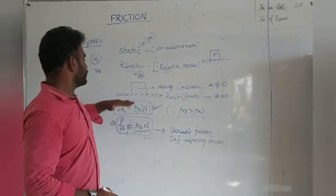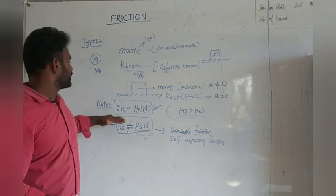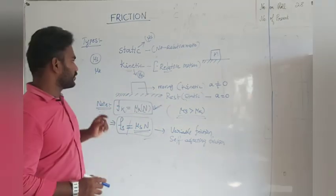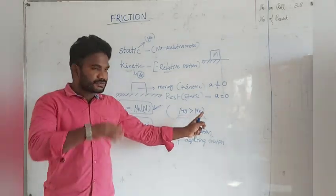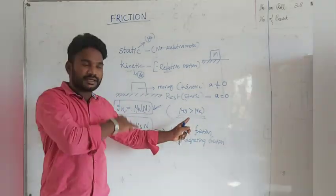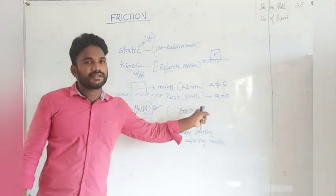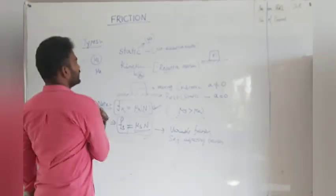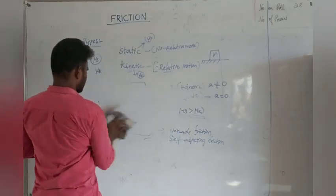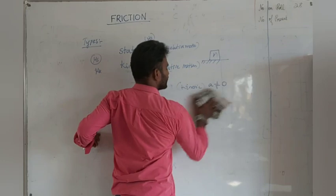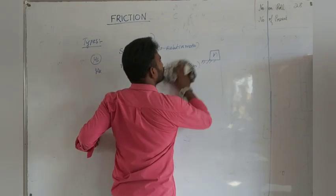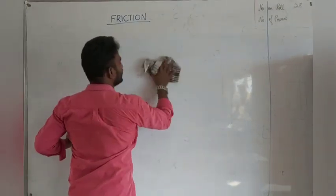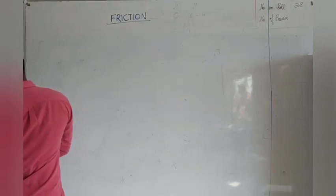So to summarize: kinetic friction Fk equals μk into normal force — this formula is very important. And μs is always greater than μk for any surface. Next, let us go for static friction alone and understand how to do problems involving static friction, then kinetic friction.